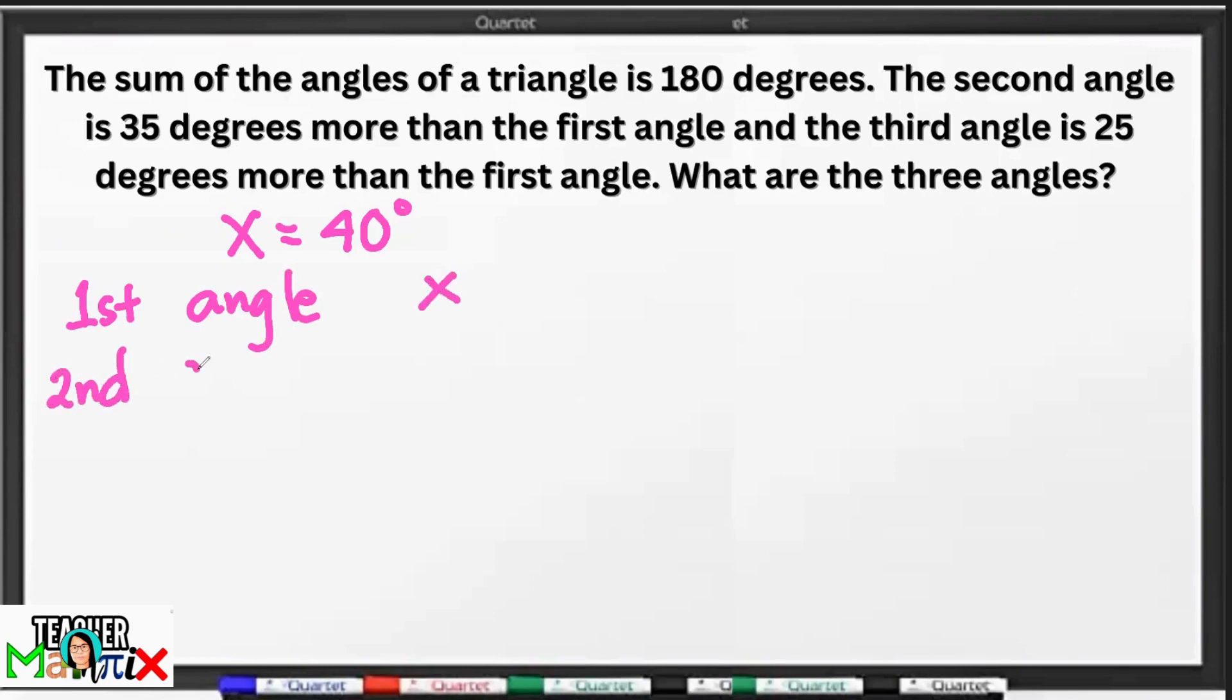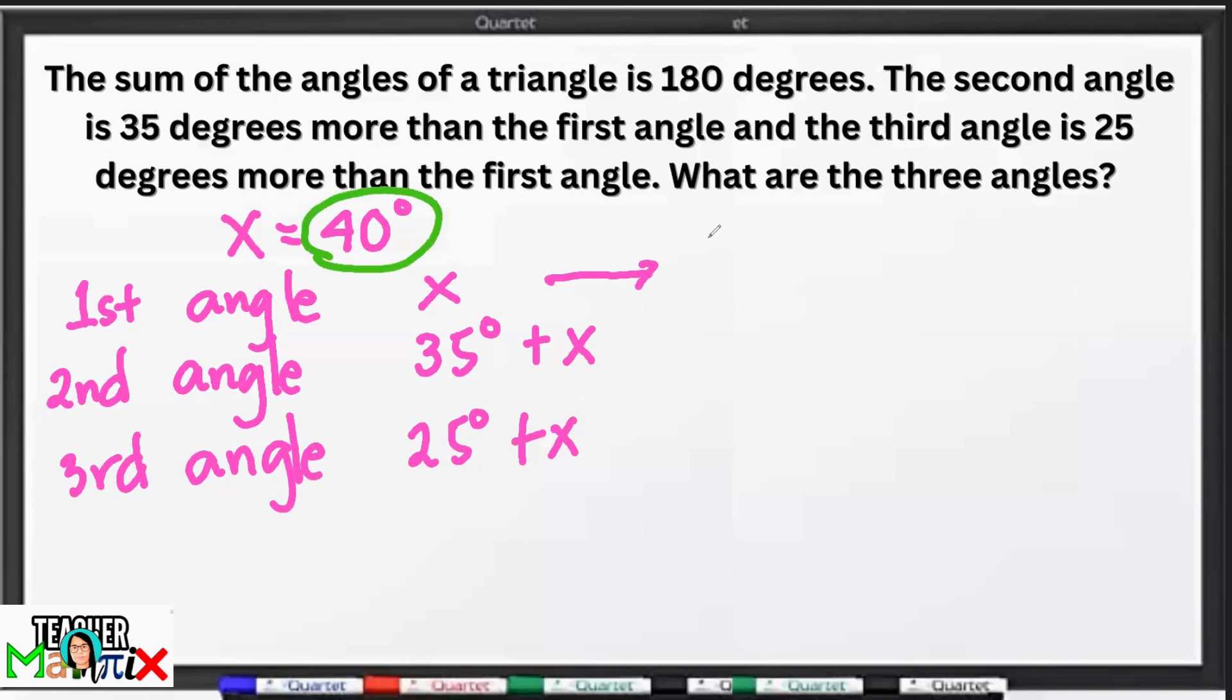Ito naman yung second angle which is 35 degrees plus x. Then sa third angle, we have 25 degrees plus x. Obvious naman na ang value ni x ay 40. So, isusulat mo nito 40 degrees. Nakuha na natin yung value ni x. Yan yung first angle.